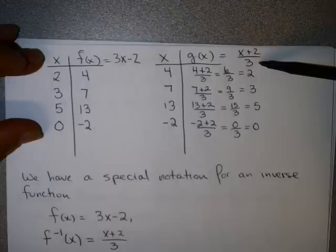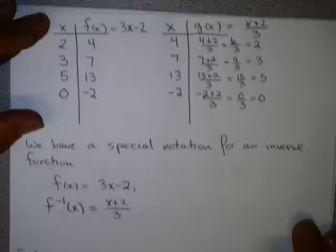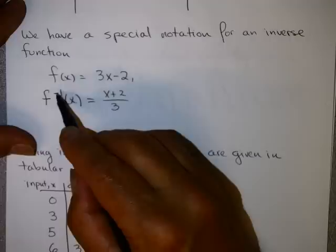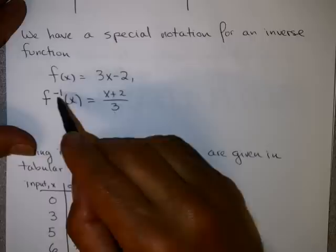We will have an algebraic way to do this in just a few minutes later in this video. But for right now, let's talk about the notation we use for inverse functions. If we are given a function f of x, for example 3x minus 2, then we often write the inverse function as f to the negative 1 of x, which is x plus 2 over 3. This notation means the inverse of the given function f. Don't let this notation confuse you — this does not mean 1 over f of x. It just means f inverse of x. It's just a name.